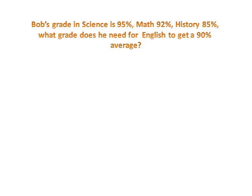Let's try this for a problem. Bob's grade in science is 95%, Math 92%, History 85%. What grade does he need for English so that he could get an average of 90%? So let's list all our information. The first three grades that he had are 95, 92, and 85. And we don't know what is his English grade, so that's the missing number. But we know that the average that he wants is 90. So what grade must he get for English to get that average?